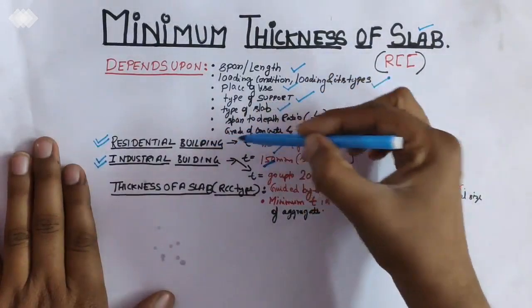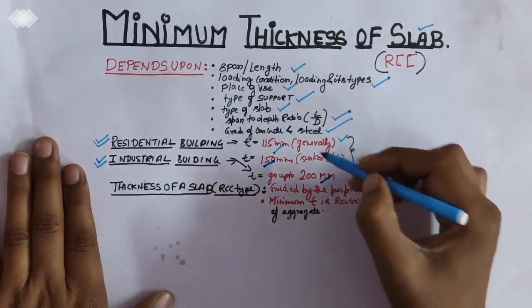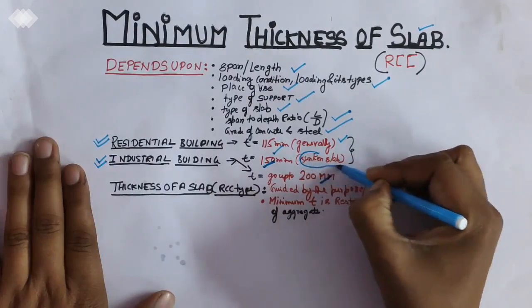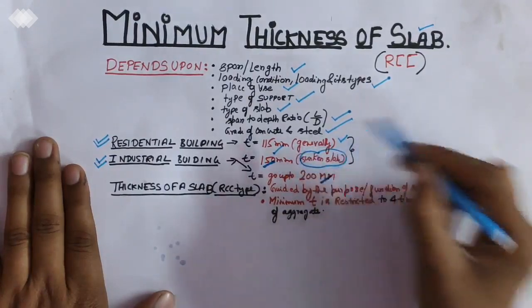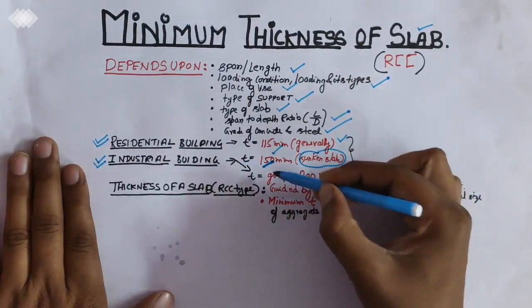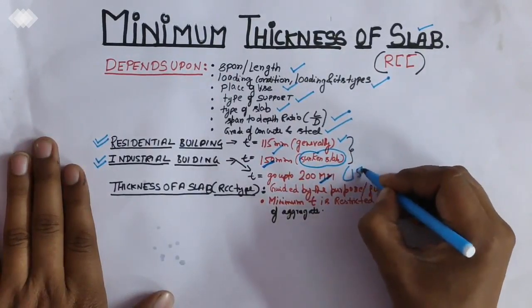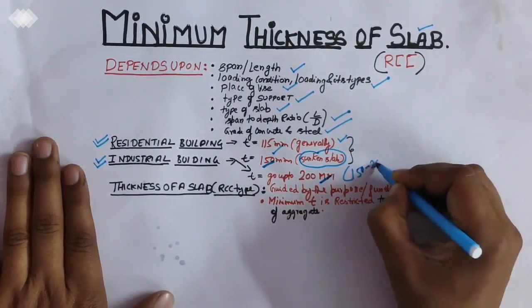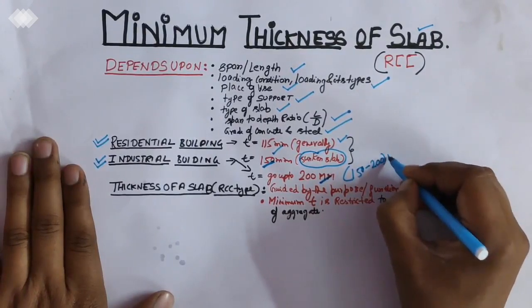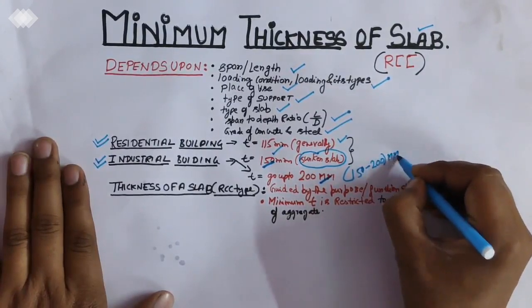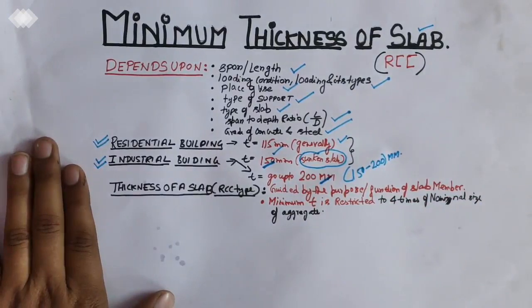In the case of residential building only, for sunken slabs we use 150. And for the industrial building, that goes up to 150. It goes in the range 150 to 200 mm, the thickness of the slab.